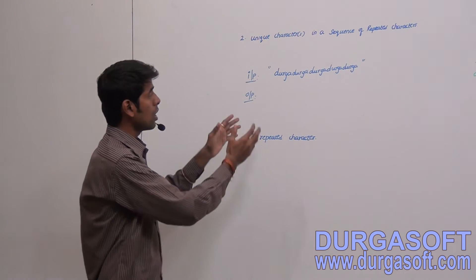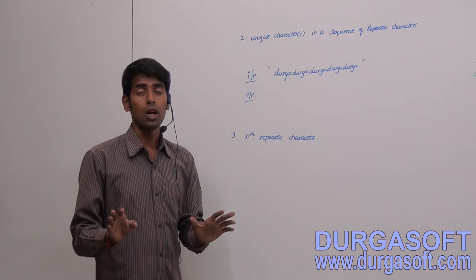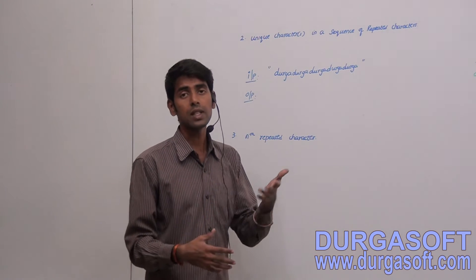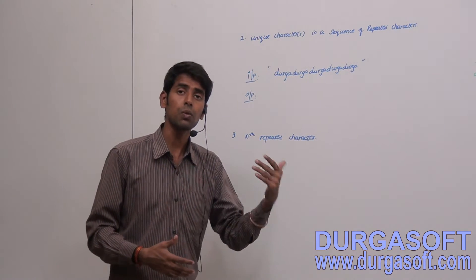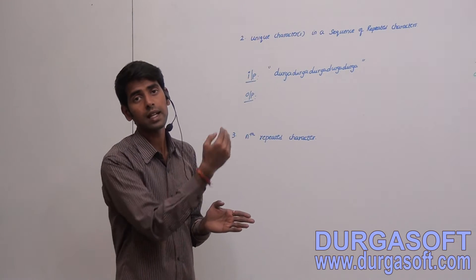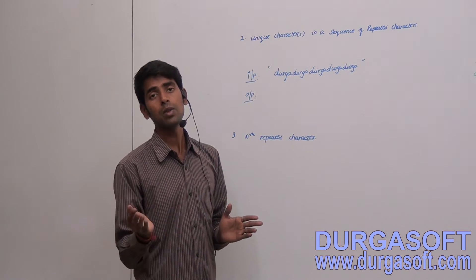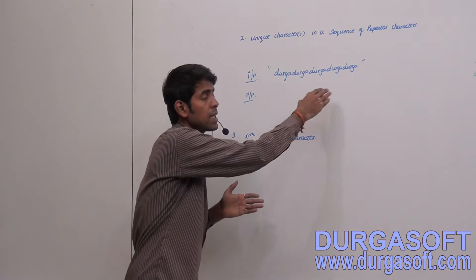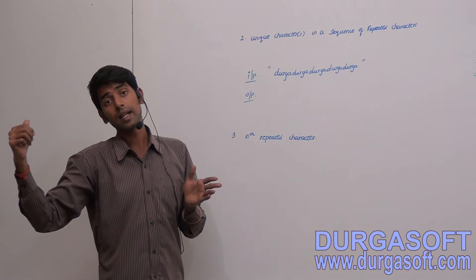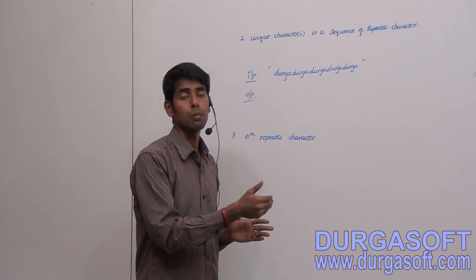If you want to do this without using any predefined instances, you can go for a linked list. There you create your own instance — a linked list with a user-defined data type — and insert unique characters, checking whether a character is already available. After completing the iteration, traverse and print the data of each node. But in this session I am going to show it using StringBuffer or String.